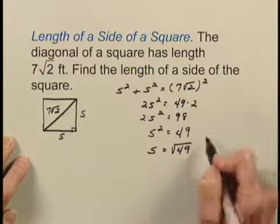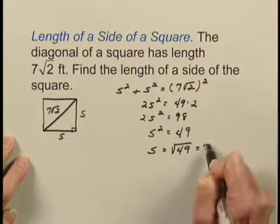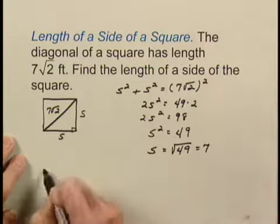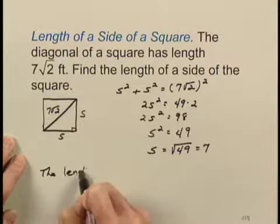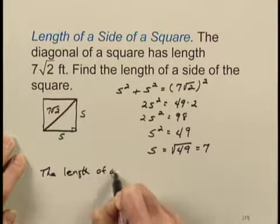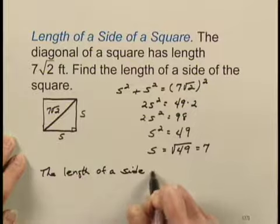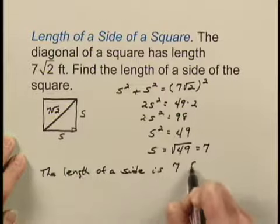So we have S equals the square root of 49, which is 7. So we would say that the length of a side of the square is 7 feet.